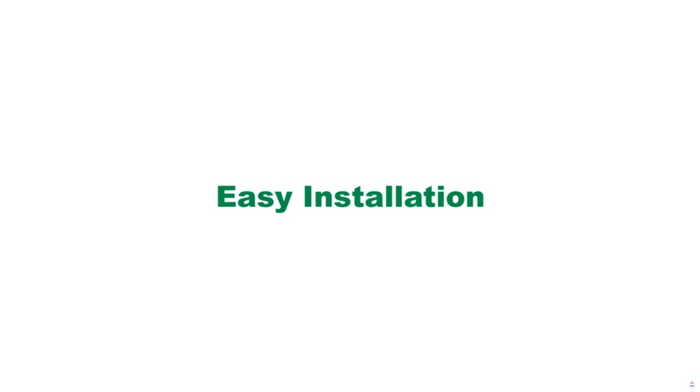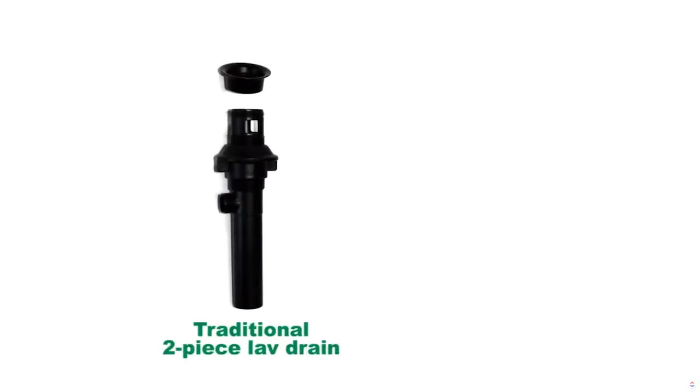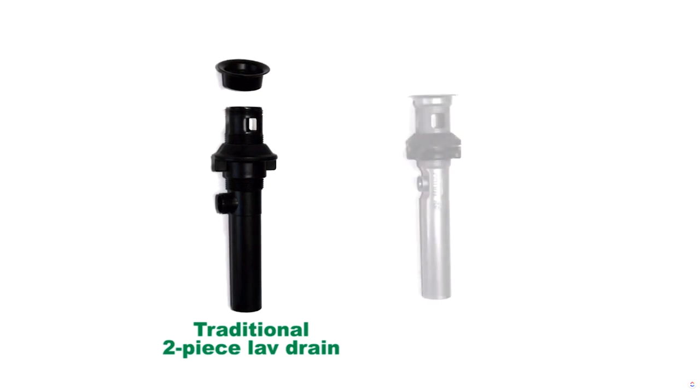The ideal lav is easier to install than traditional lav drains. Traditional lav drain bodies are comprised of two pieces. It is difficult to join the top of a traditional lav drain that is installed through the drain hole with the bottom of the lav drain that is installed under the sink.